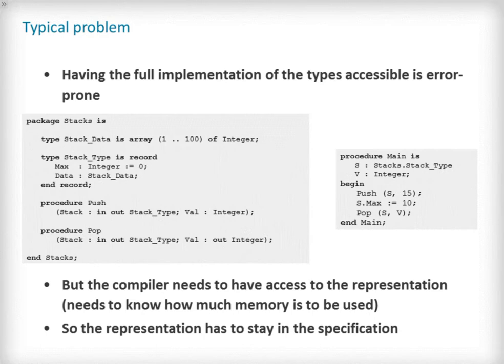However, the compiler needs to have access to the representation so to know how much memory is to be used for certain objects. So the representation somehow needs to stay in the specification but be private.